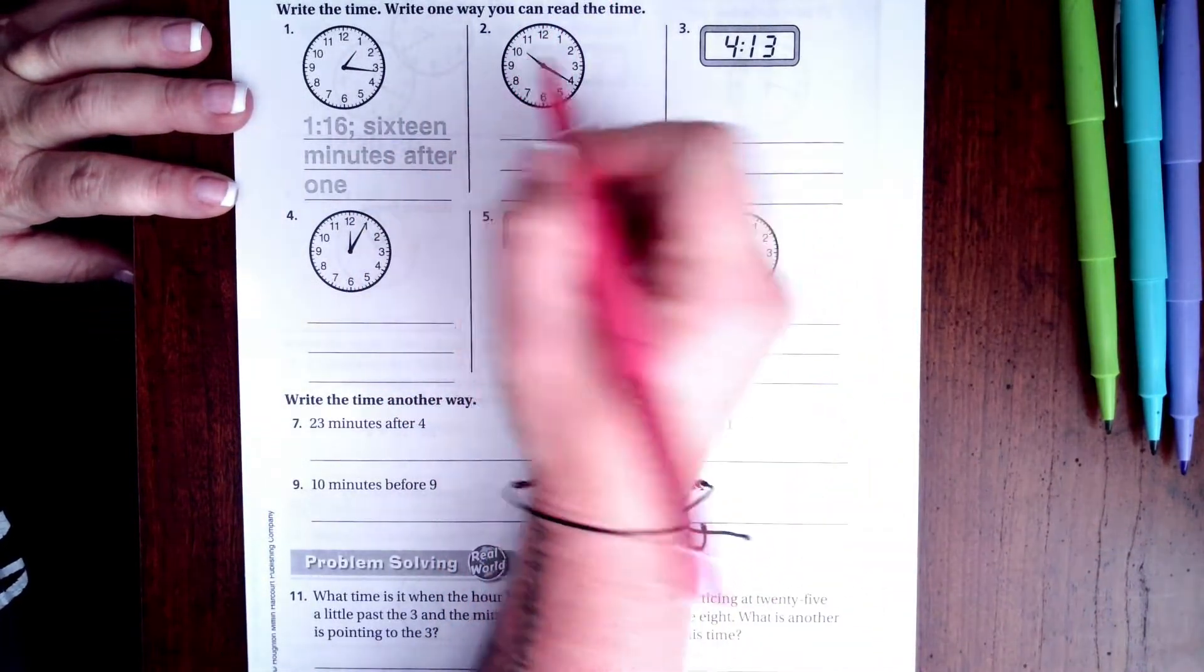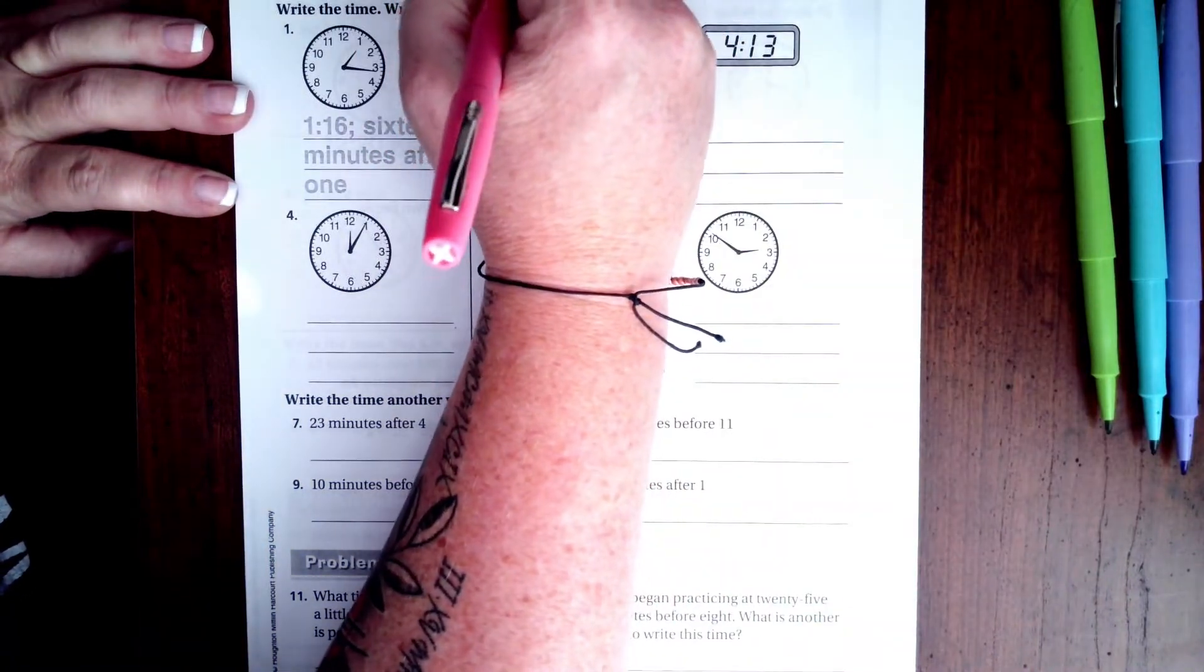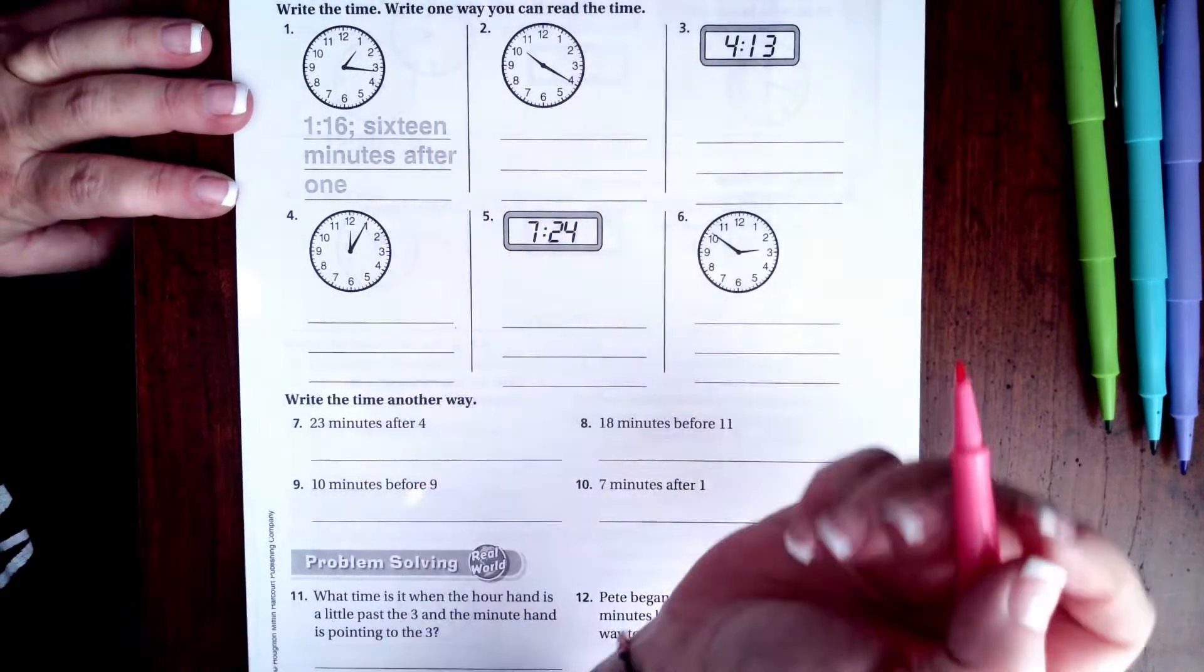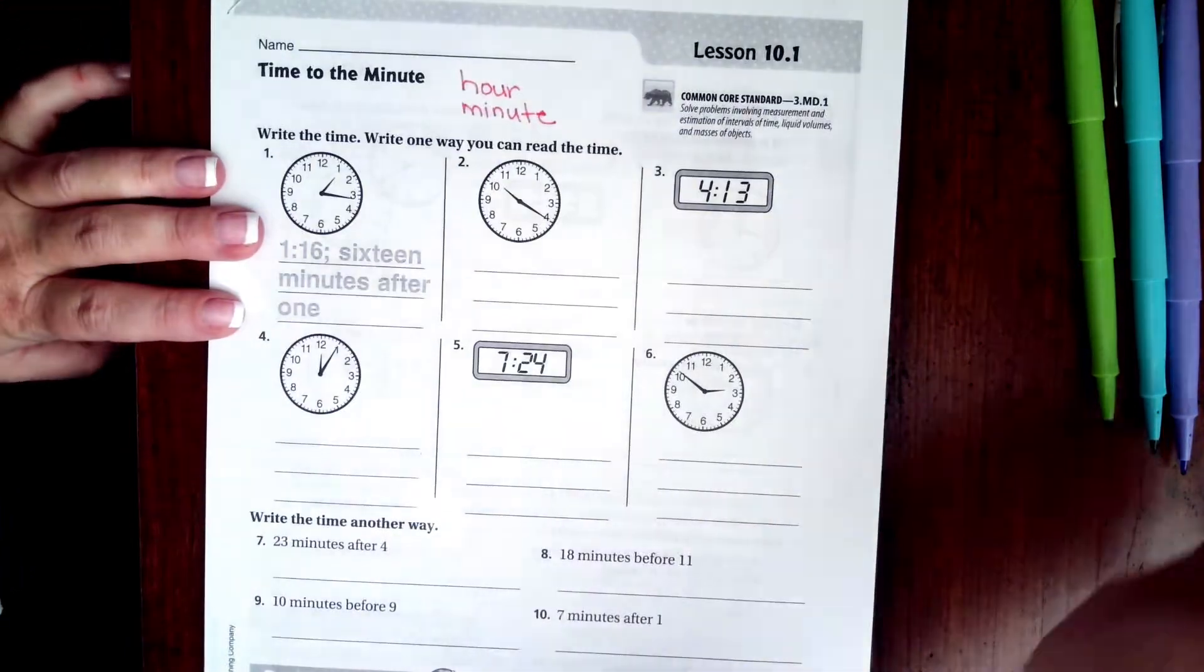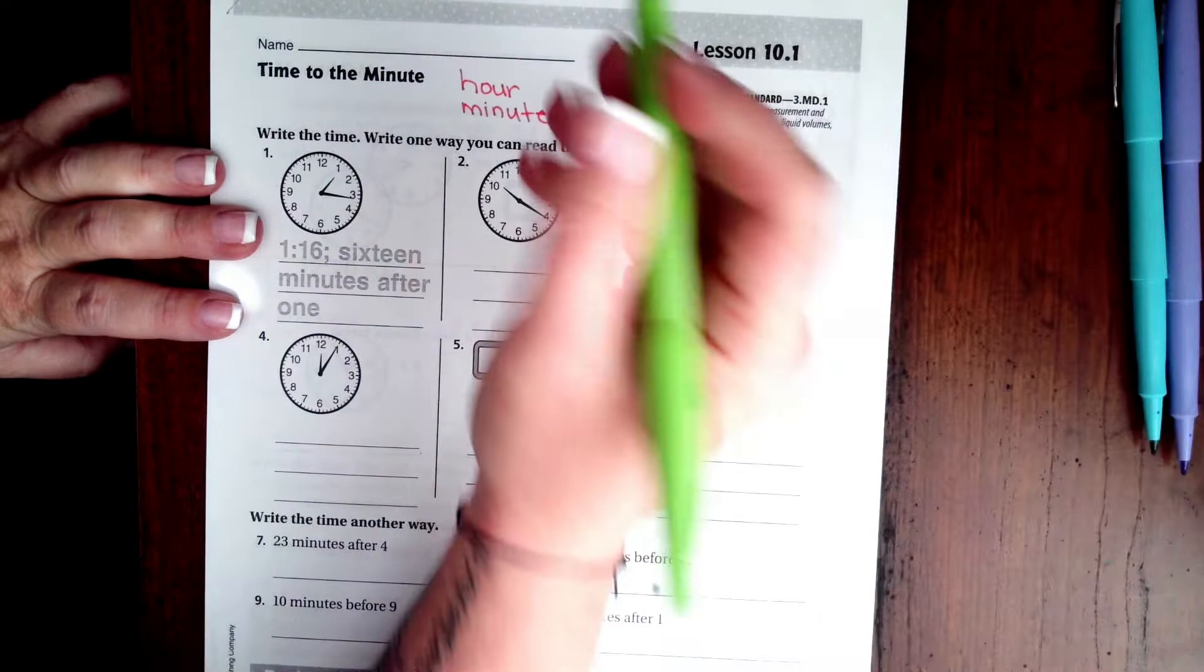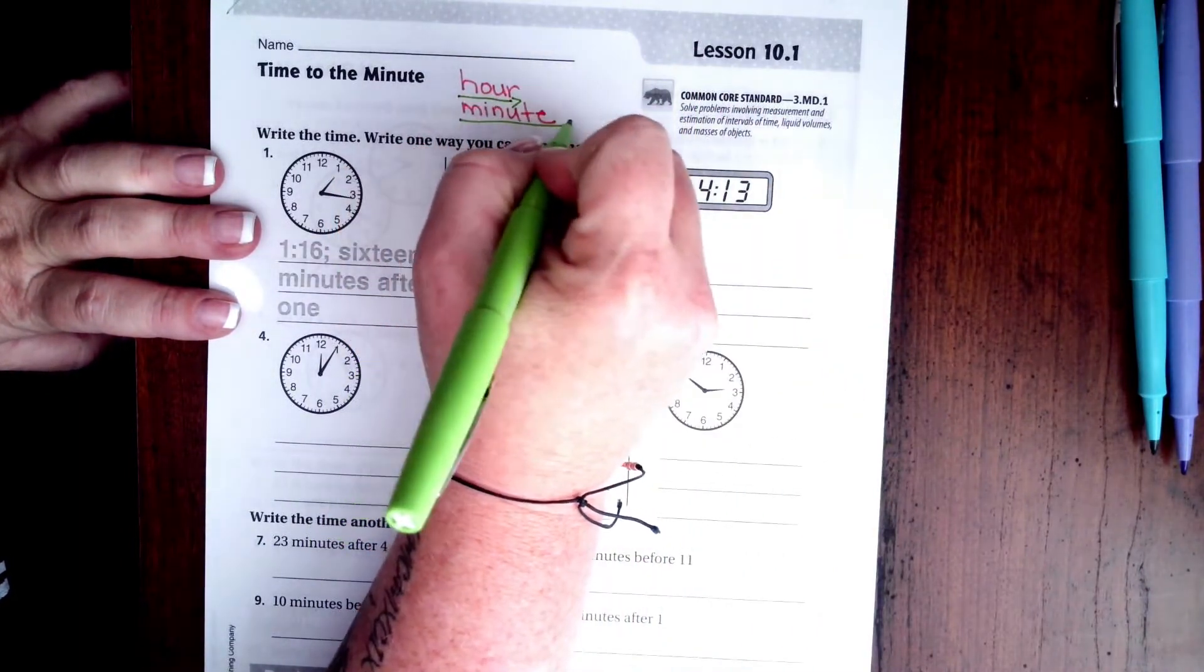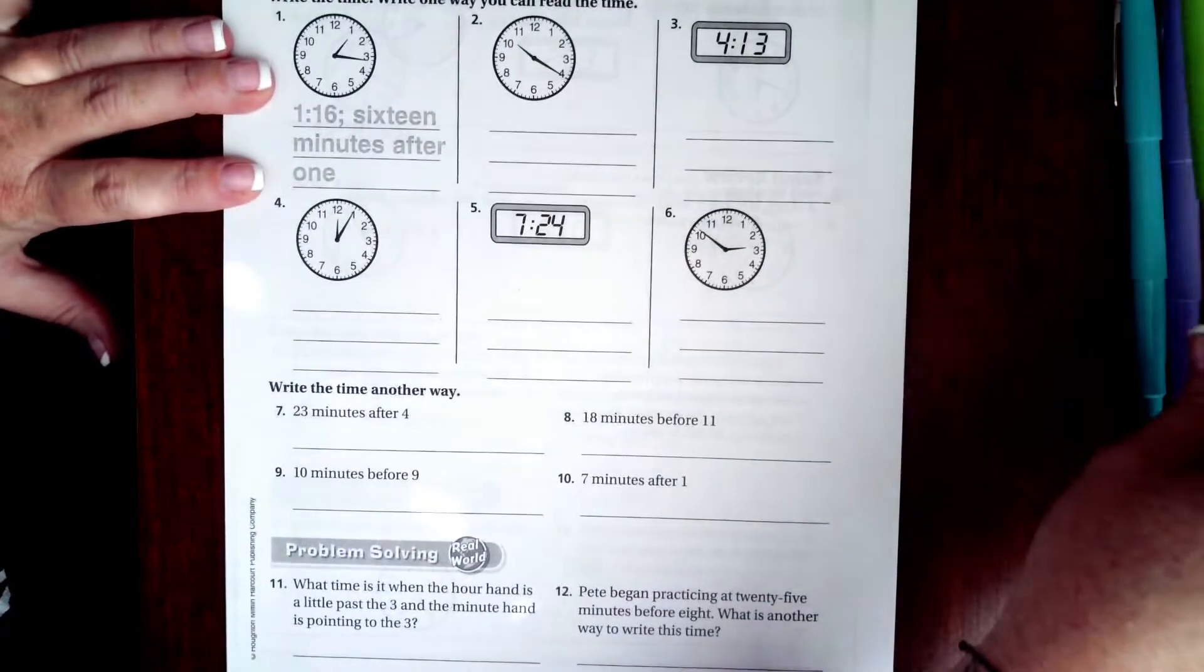When you look at the words hour and minute, if you have a hard time remembering which one is the short hand and which one is the long hand, hour is a short word so it's the short hand. Minute is a long word so it's the long hand. Just keep that in mind when you're doing this.